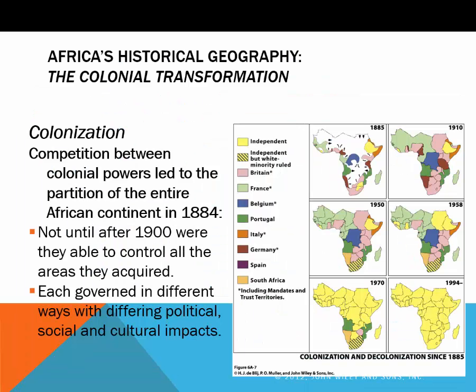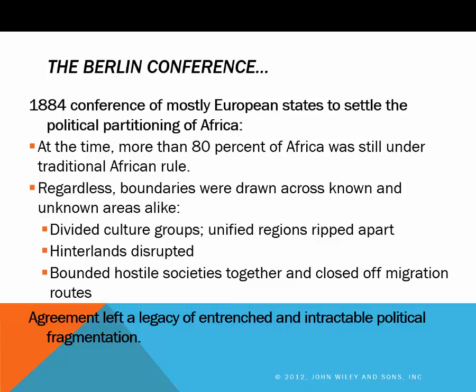In the second half of the 1800s, European powers began to take over African lands. There was a conference in Berlin in 1884 to carve up the continent between the major colonial contestants: Britain, France, Portugal, Belgium, and Germany. Each country governed their colonies in different ways, from democracies to dictatorships. The Belgians were especially harsh to the people who inhabited the Congo, killing 10 million Congolese during the murderous reign of King Leopold II. The Berlin Conference divided culture groups, unified regions were ripped apart, and bounded hostile societies together — this would have a lasting impact even after decolonization.